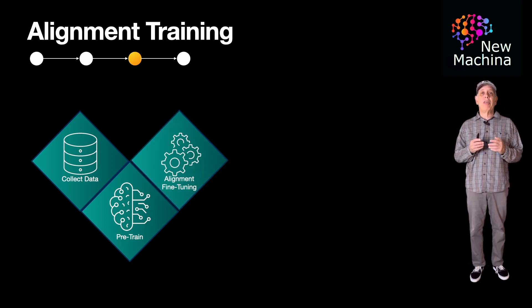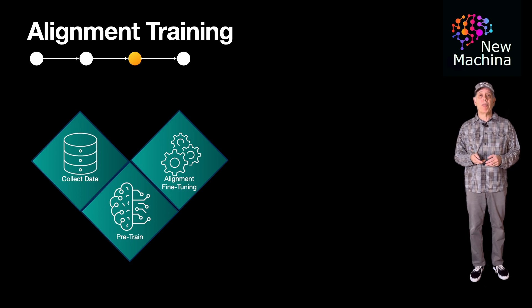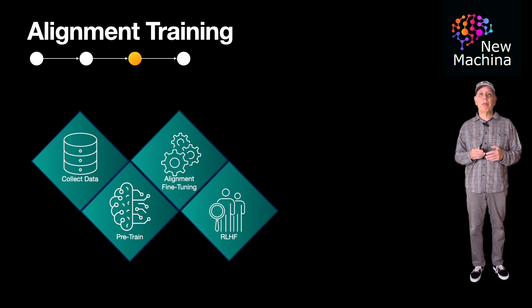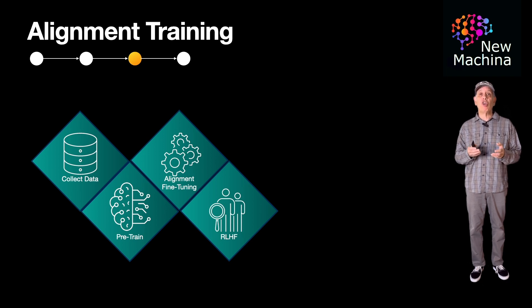In the third step, the LLM goes to alignment fine-tuning. At this point, the LLM can be fine-tuned with additional specific curated datasets that reflect aligned behavior. The fourth step of the lifecycle involves reinforcement learning with human feedback, or RLHF for short. In this step, the LLM is further aligned with human values and preferences by fine-tuning it with direct human feedback.